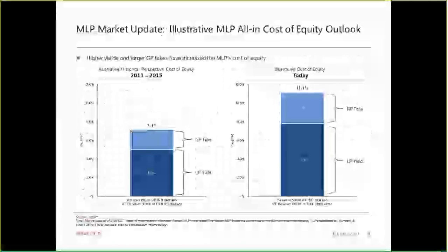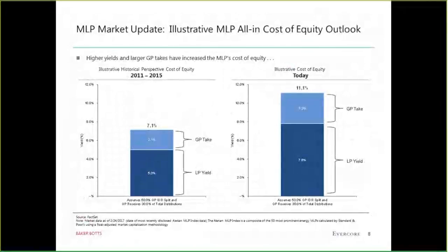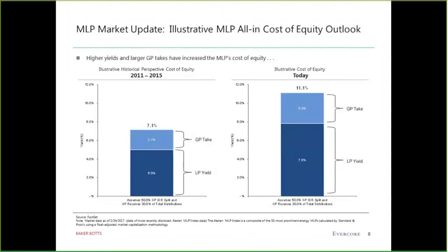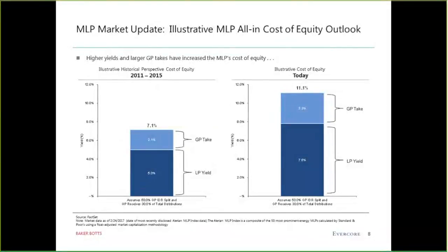Factoring in the overall environment, on page eight, we look at MLPs' cost of equity. On the left-hand side, using the Alerian index, assuming a 5% yield with the MLP deep into the 50% IDR tier and the GP taking about 30% of overall cash flow — 5% going to the LP, 2.1% going to the GP — the all-in cost of equity is about 7.1%. Today, however, the Alerian index is at 7.8%. Using the same assumptions, the cost of equity rises to 11.1%, which has caused a little disruption.